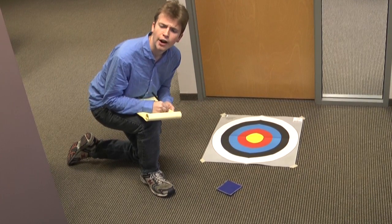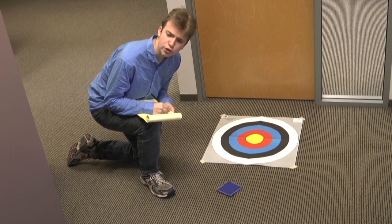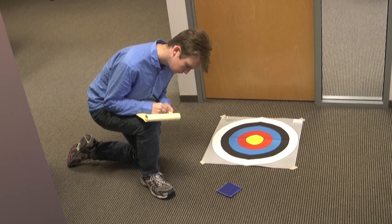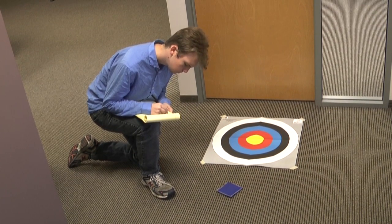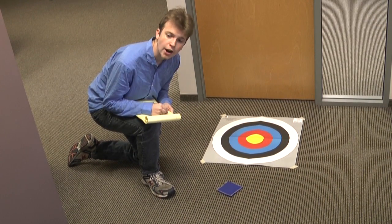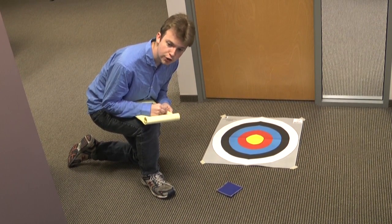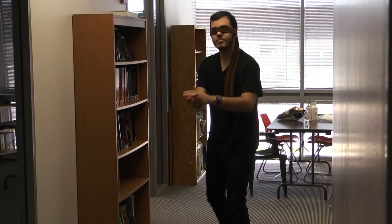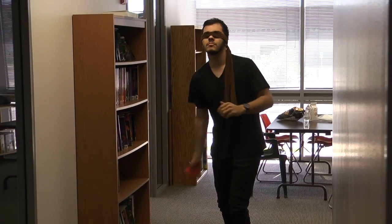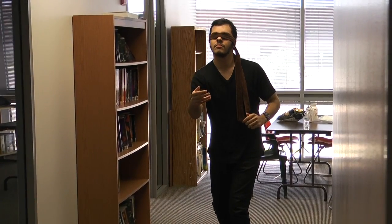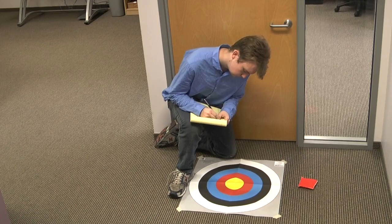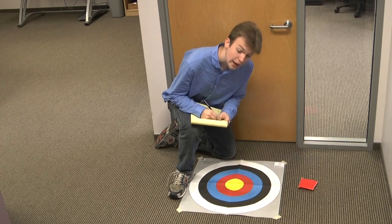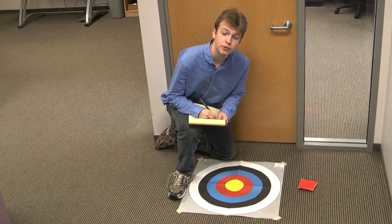Experimenter, you will need to provide KR, or Knowledge of Results, to participants after each throw. If the participant is in Group 1, provide specific KR — for example, "It's a foot and a half to the right."